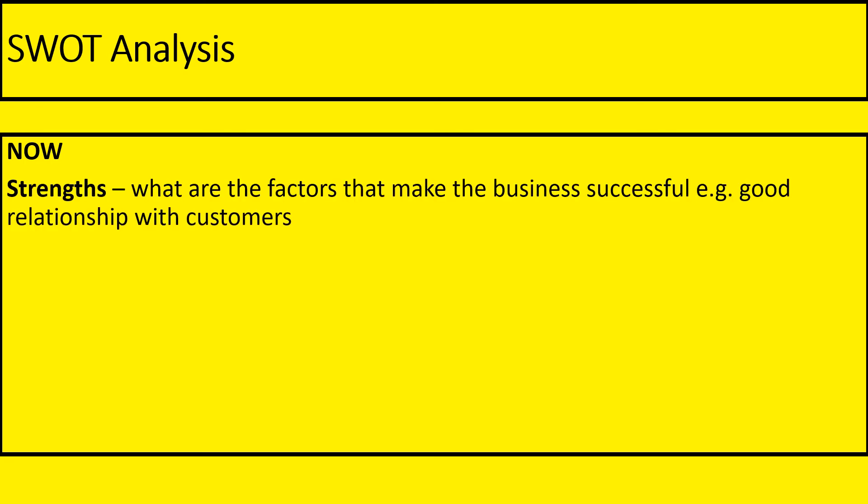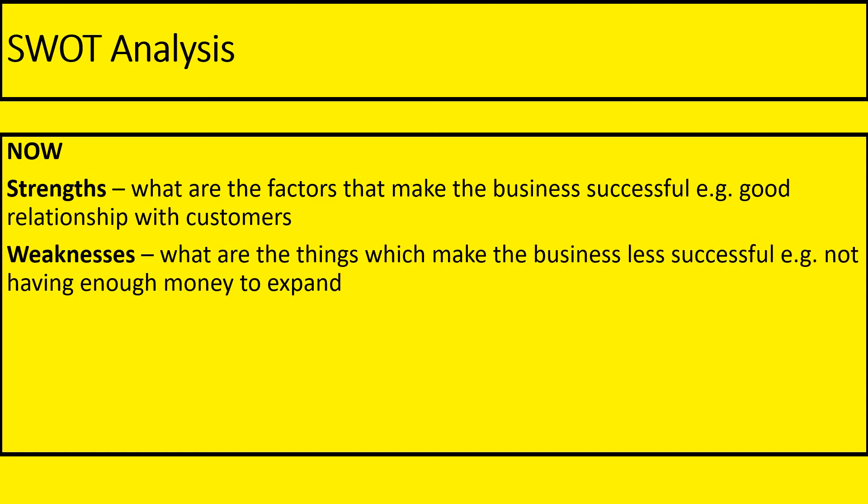When we have done our PEST analysis, we're now able to do our SWOT analysis. What we're going to do is look at the business right now. S — what are its strengths? What are the factors that make our business successful? Is it that they have good relationships with their customers? Is it that they don't have much competition, or that they use technology really well? We all have our weaknesses, so W — what are the things that make your business less successful? It might be that they don't have enough money to expand, or that they have loads of competitors. Look at what is happening now: strengths and weaknesses.